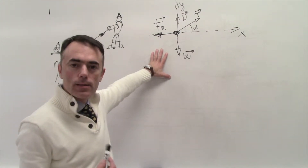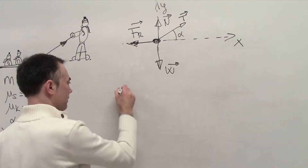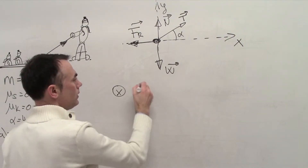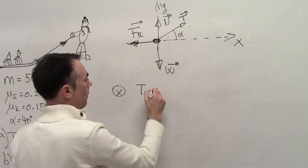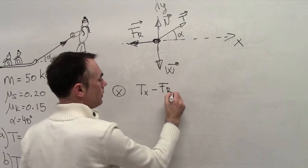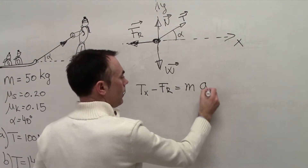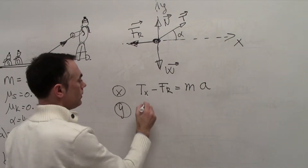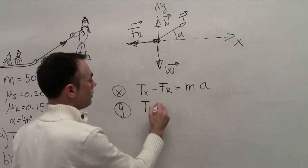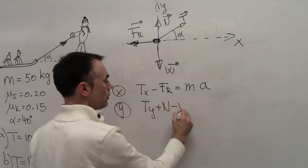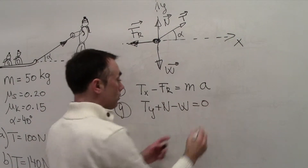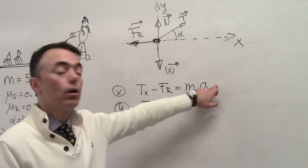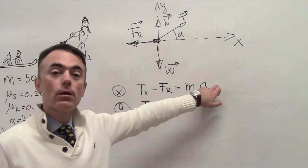Writing Newton's equations: in the x-axis, Tx minus friction force equals ma. In the y-axis, Ty plus N minus W equals zero, because we know there is no acceleration in the y-axis. Whether there is acceleration in the x-axis is something we still have to figure out.